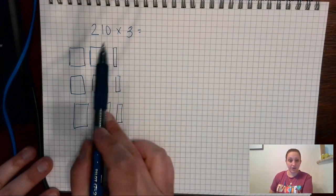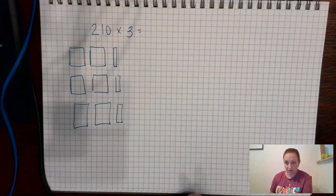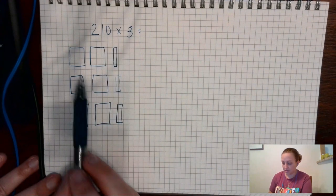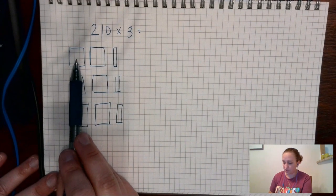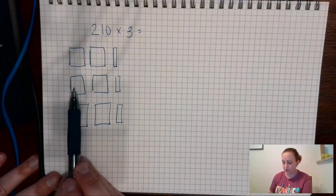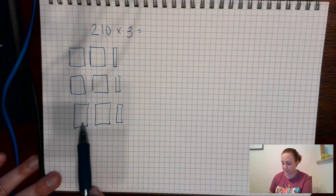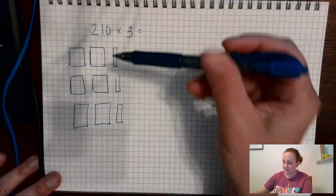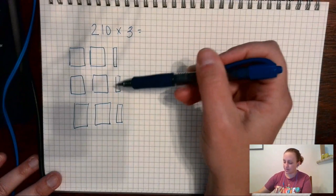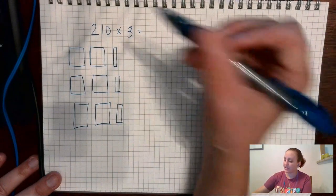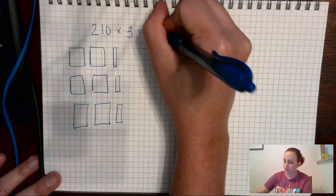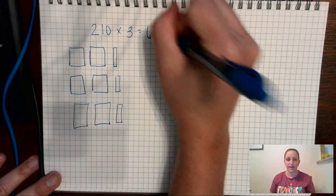Now I can literally just count: 100, 200, 300, 400, 500, 600 — that's the hundreds — then 610, 620, 630. So that equals 630.